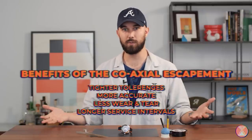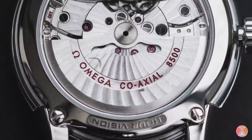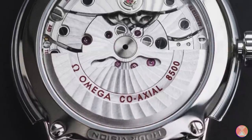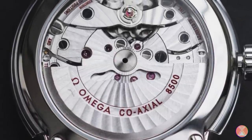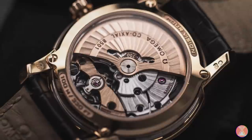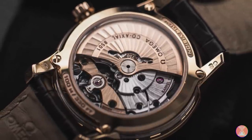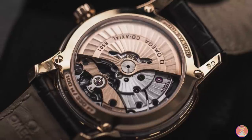Like I said, you get almost double a service interval between you having to send it in. All of these benefits allow the coaxial to become the foundation Omega built upon to achieve their master chronometer status. And to be fair, achieving the same feat with Swiss lever escapement would be difficult, especially at the scale Omega does it at.